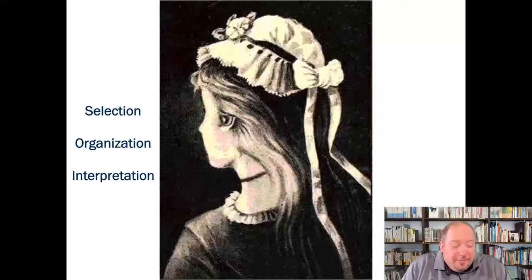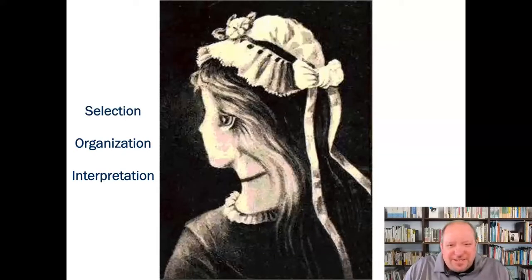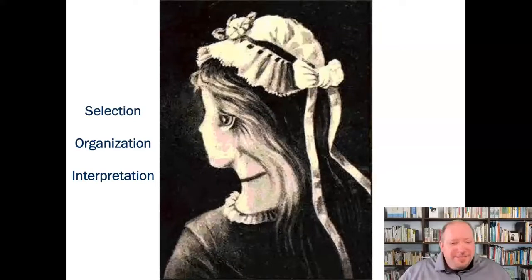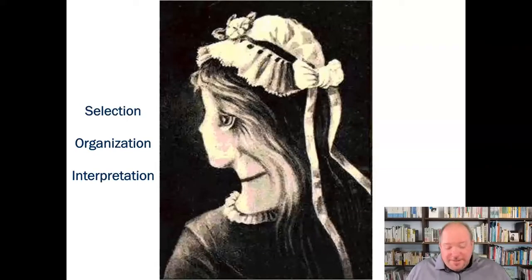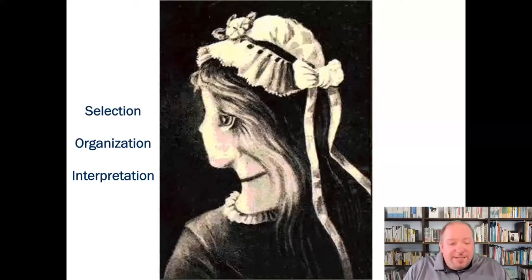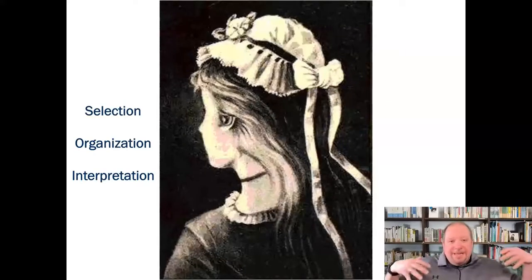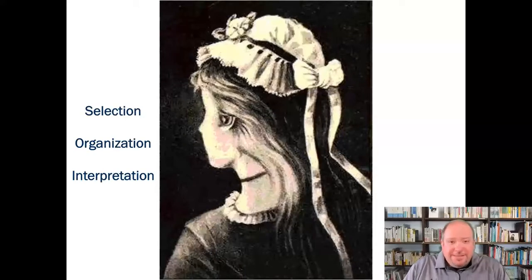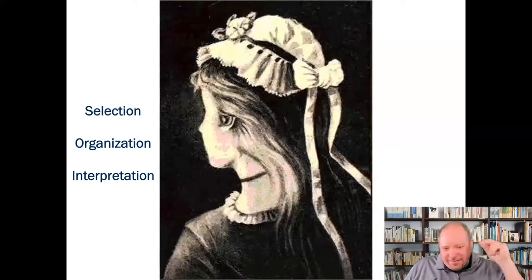Then we get into interpretation — we start looking at details. If you're seeing the older one, is she an old woman? Is she a witch? Some people look at the bump on her nose and say that's something witches have in stories, so she must be a witch. That's interpretation based on your history. If you're seeing the younger woman, your interpretation that she's younger is personal — we don't actually know that. Maybe she's dressed that way for a play or a festival. Our minds fill in those gaps based on our experiences, knowledge, and understanding of the world.